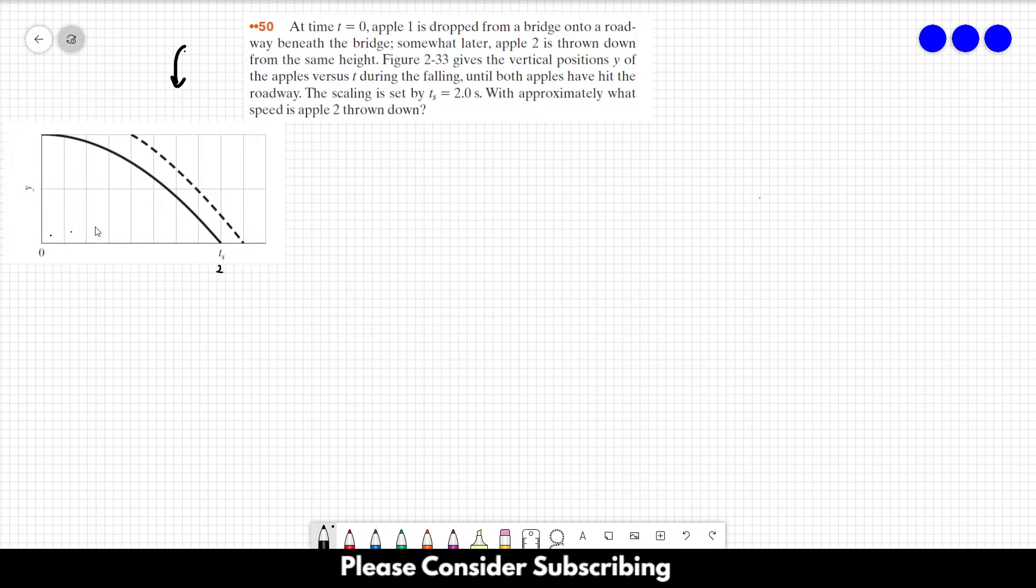So ts is equal to 2 seconds, and since we have 1, 2, 3, 4, 5, 6, 7, 8 different divisions, each division equals 0.25 seconds. So this is 0.25, this is 0.5, 0.75, 1, 1.25, 1.5, 1.75, and 2.25.